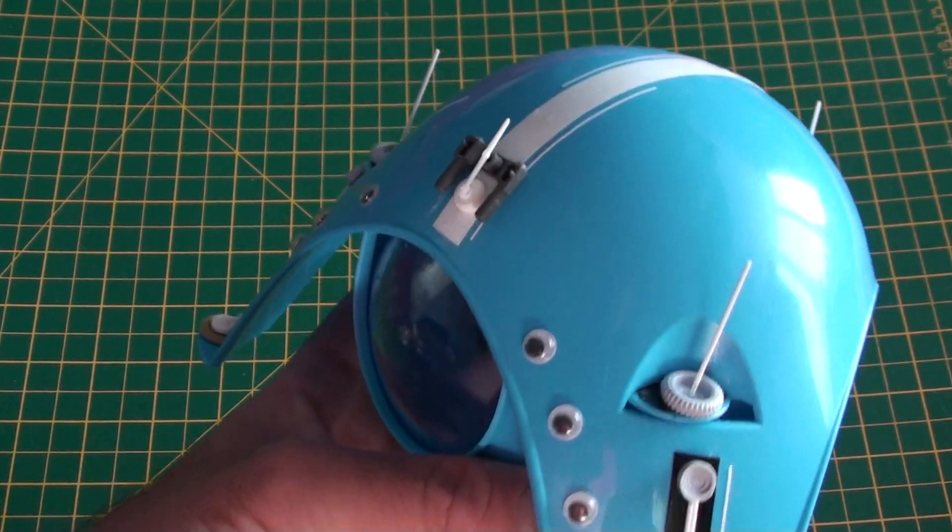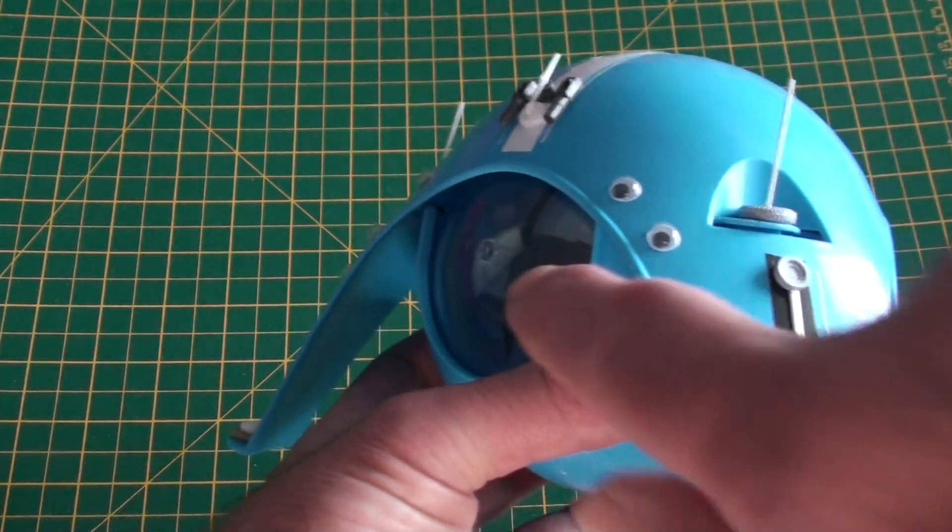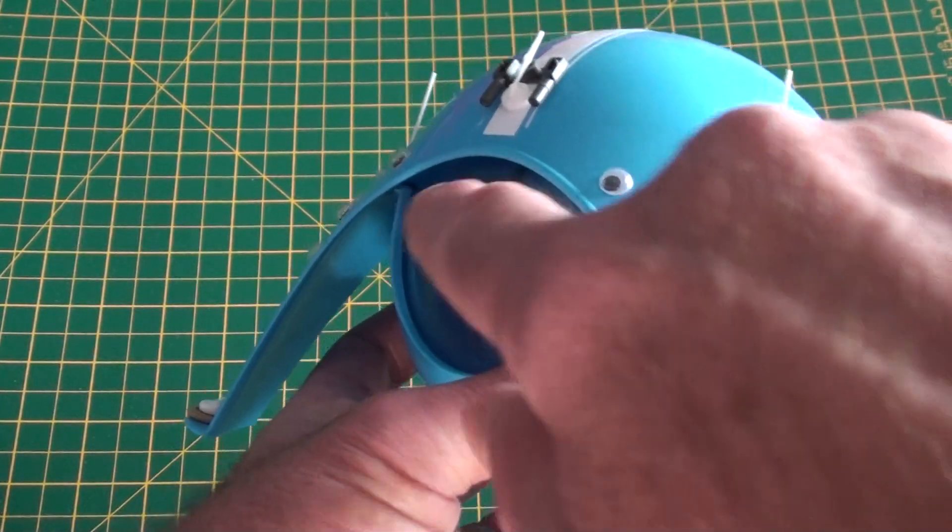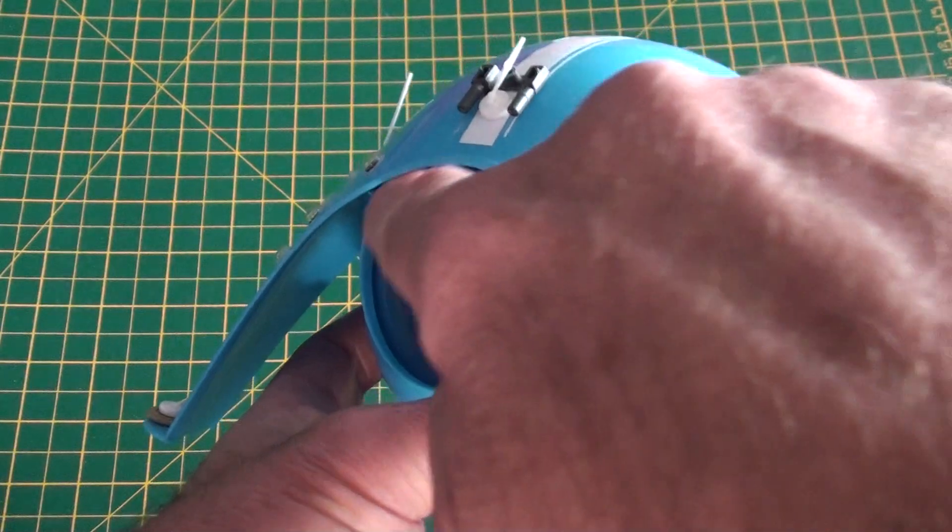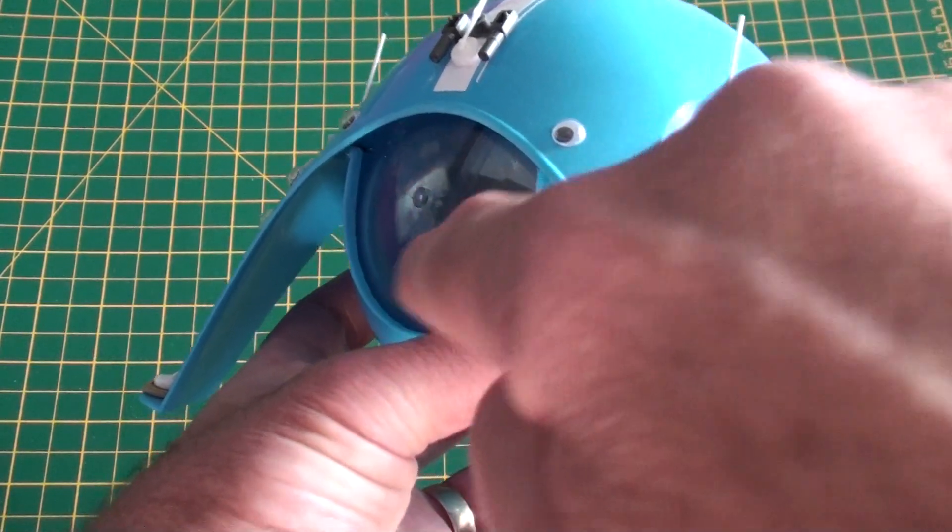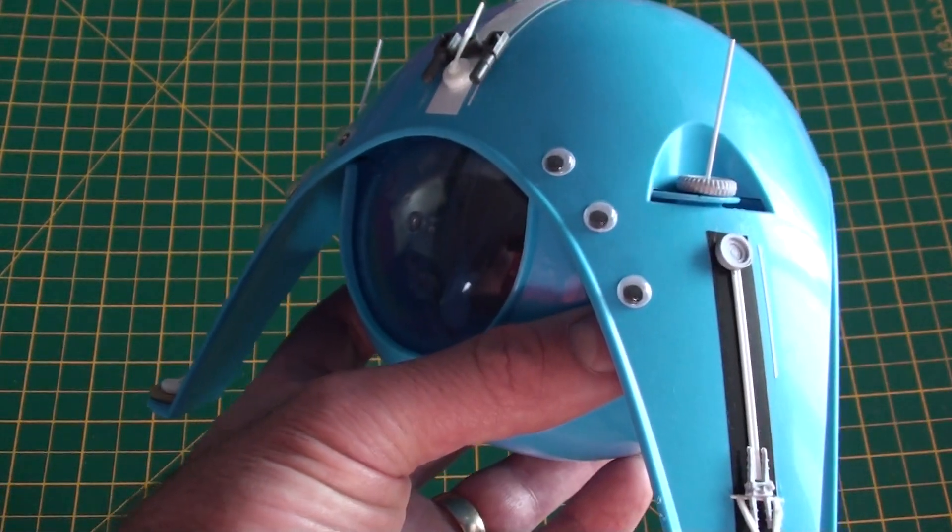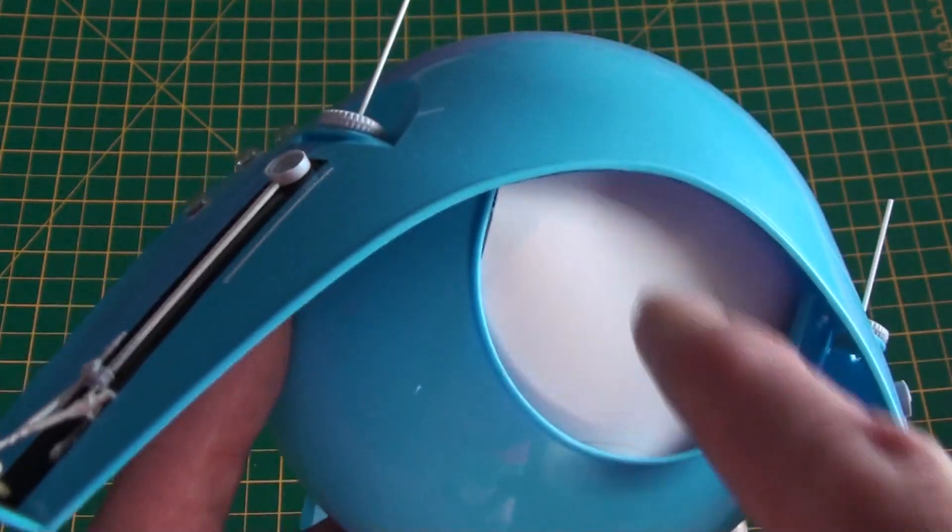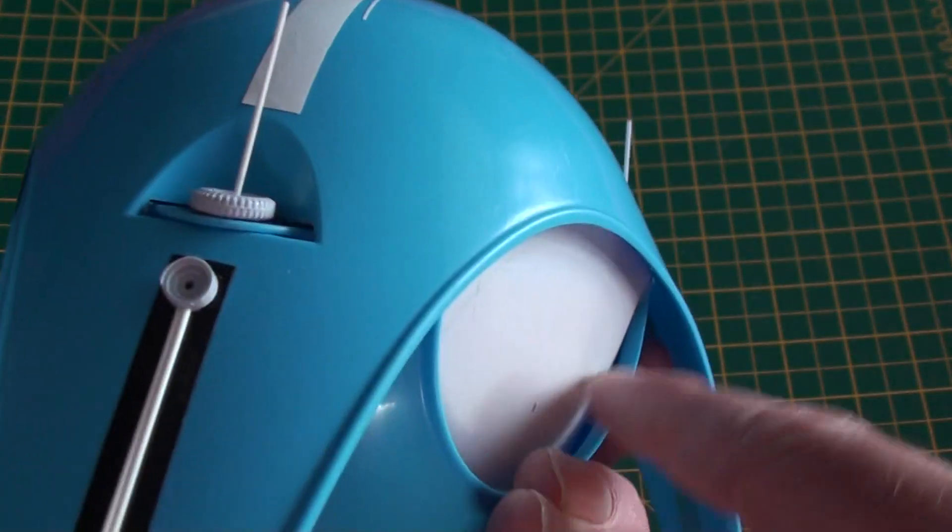First thing I did was put a clear dome in it because I wanted to be like a bit like a War of the Worlds '53, War of the Worlds Martian eye sort of thing going on there at the front. Close these other two holes off with plastic card.